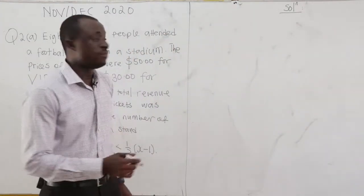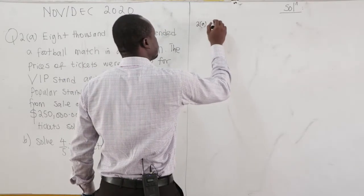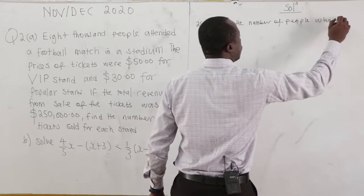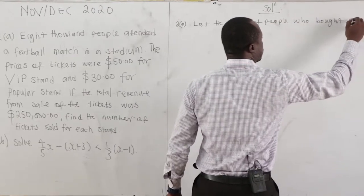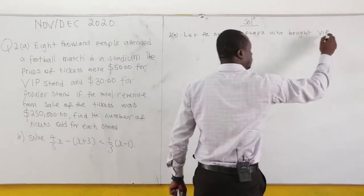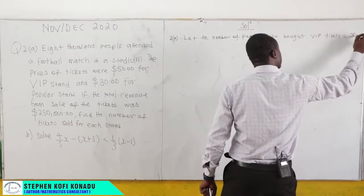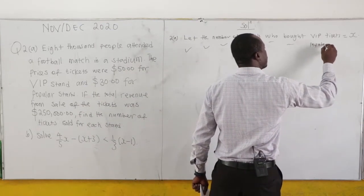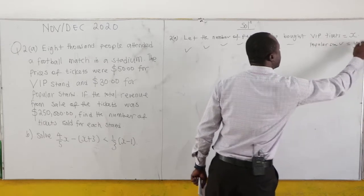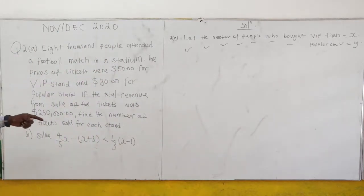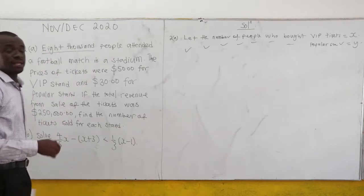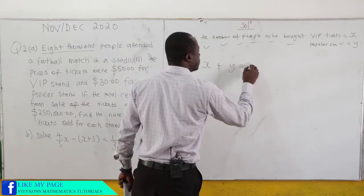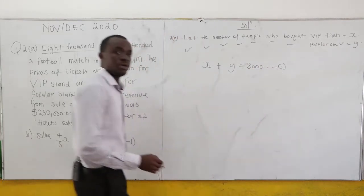So we have a popular stand and a VIP stand. We can say that let the number of people who bought VIP tickets be X, and the number of people who bought popular stand tickets be Y. We have been given that the total 8,000 people attended. Hence, the number of people who bought the VIP stand plus those who bought the popular stand equals 8,000. This is equation 1.